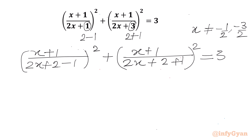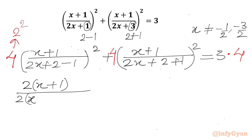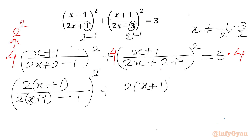Now we multiply both sides by 4. Since 4 = 2², we bring the 2 inside each squared denominator. This gives us: [2(x+1)/(2(x+1)−1)]² + [2(x+1)/(2(x+1)+1)]², and the right-hand side becomes 3 × 4 = 12.